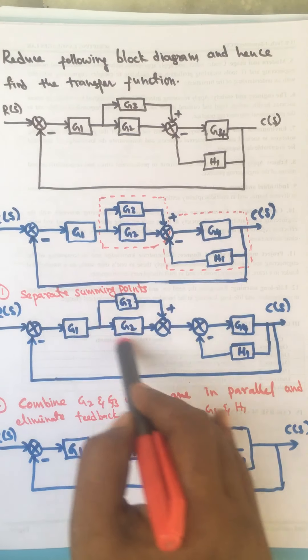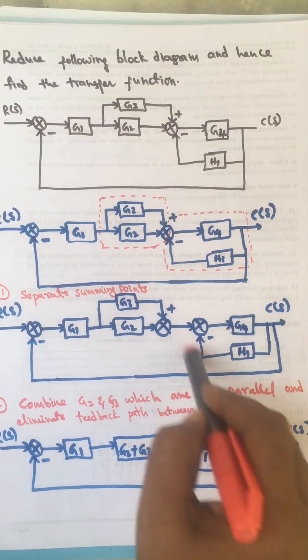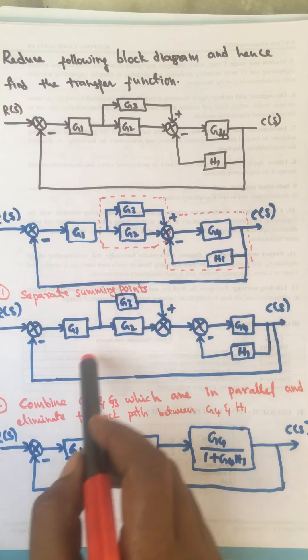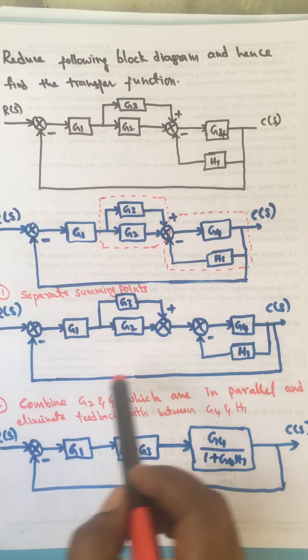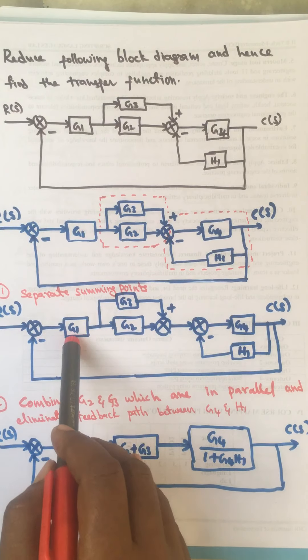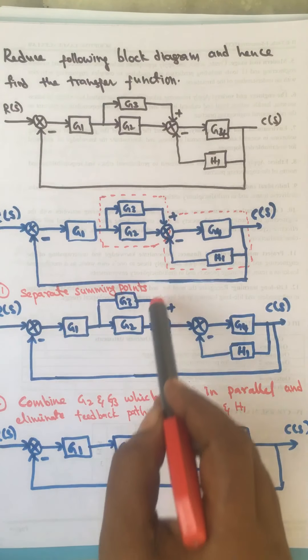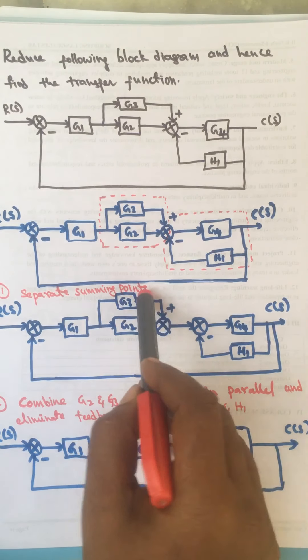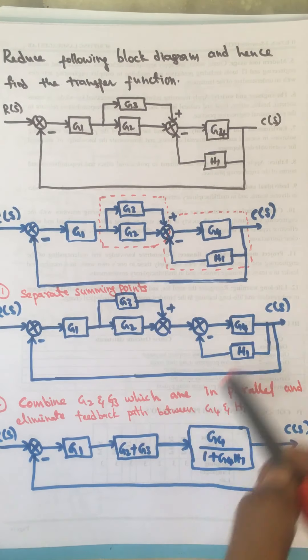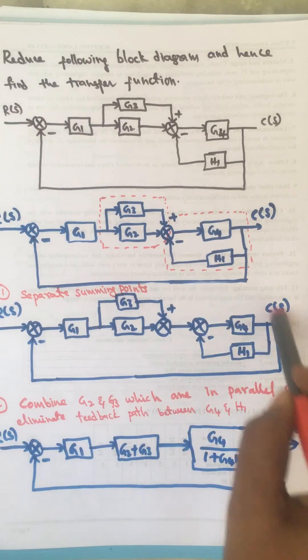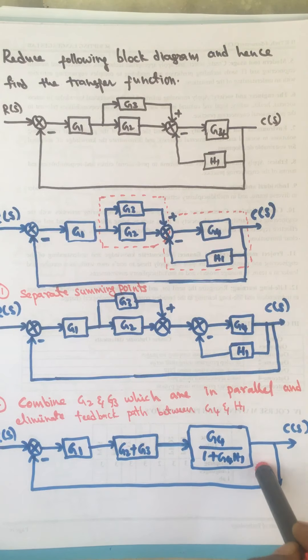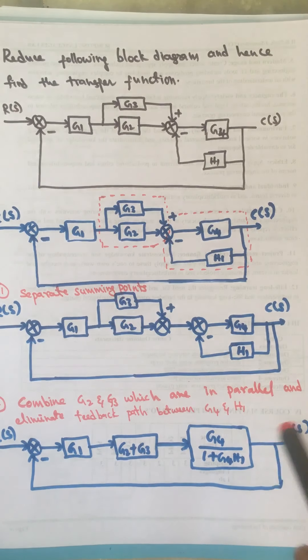The inner loops are now cleared. The blocks we are left with are: a gain of G1, then G2 plus G3, and the next one is G4 divided by 1 plus G4·H1.